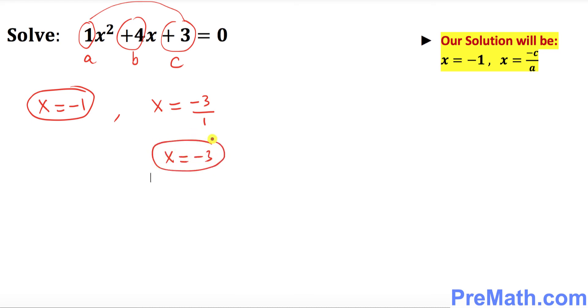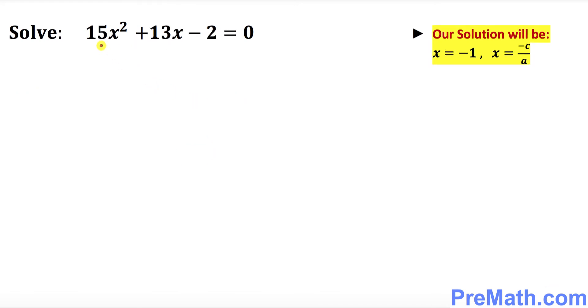How about this example? Our a is 15, b is positive 13, and c is negative 2. Once again, the first and the last, if you add them, equals the middle one. So our solution set is going to be simple.